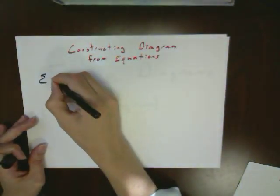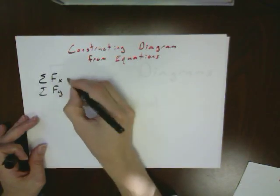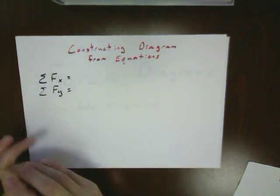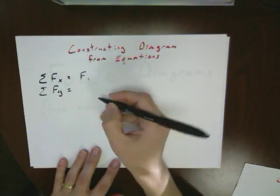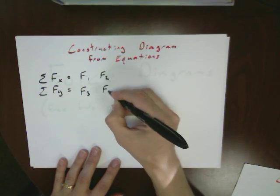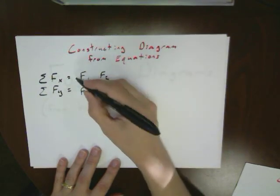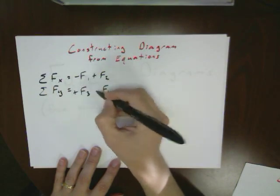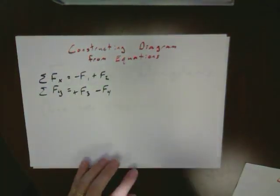Let's start off with a set of equations where you have the sum of the forces of x and the sum of the forces of y. We can put down some f1, f2, f3, f4. In your equations there's going to be various plus and minus signs. This is a really simple one so we'll start with this one first.